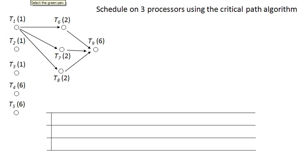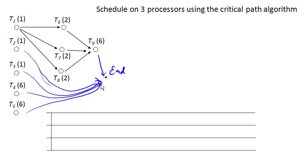So we want to schedule this digraph on three processors using the critical path algorithm. So we'll go ahead and introduce an end vertex. And this is going to be a little tricky to draw here because each of these leads to the end. Notice we have a lot of independent tasks that can be completed at any time.